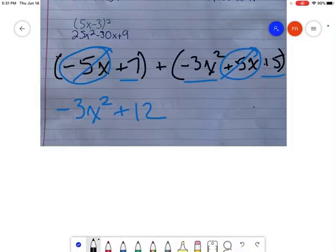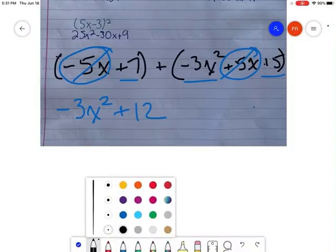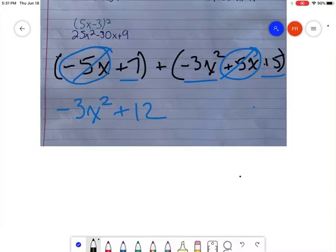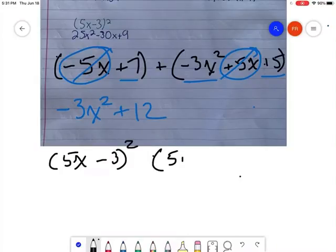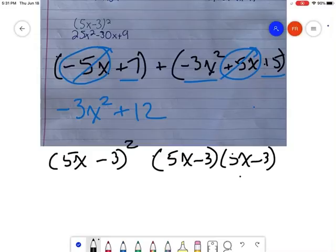Number 2. So we have 5x minus 3 squared. Remember what that means - I'm going to write 5x minus 3 and another 5x minus 3.